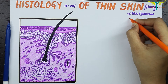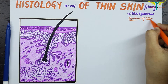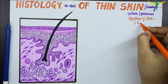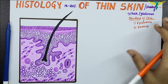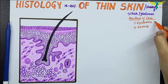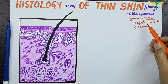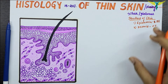The skin consists of two layers: one is the epidermis and another is the dermis. The epidermis is the most superficial layer of the skin, made up of stratified squamous epithelium. The dermis is the deeper layer, made up of a connective tissue layer.